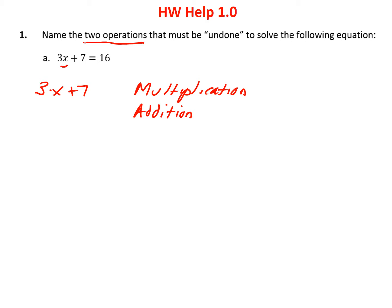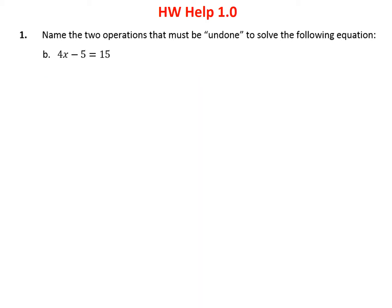In the next problem, find your x. Here's my x. What's happening to x? x is being multiplied by 4, so we're going to have to undo multiplication. And then they're subtracting 5, so we're going to have to undo the subtraction. Those are our two operations.